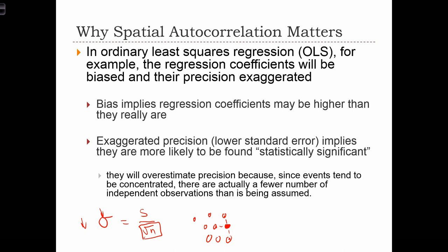because these data values aren't independent over space, we don't actually have the full 9 independent samples to use in this equation. Really, we effectively have some smaller number of independent pieces of information, because some of the information we have about one location can be gleaned from knowledge of the data values at nearby observations. So each observation can't really be counted as a full independent sample. Perhaps we only have enough information to constitute 6 independent samples, and then we should be using the square root of 6 in this equation.